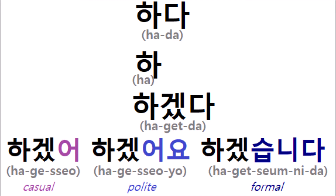We conjugate using the same endings as the simple present. Let's review those endings. Getta is an a-verb, so the casual ending is a, the polite ending is a-yo, and since the verb root ends in a consonant, the formal ending is sim-ni-da. So: intend to do is ha-getta, ha-getta-yo, ha-gettsim-ni-da.